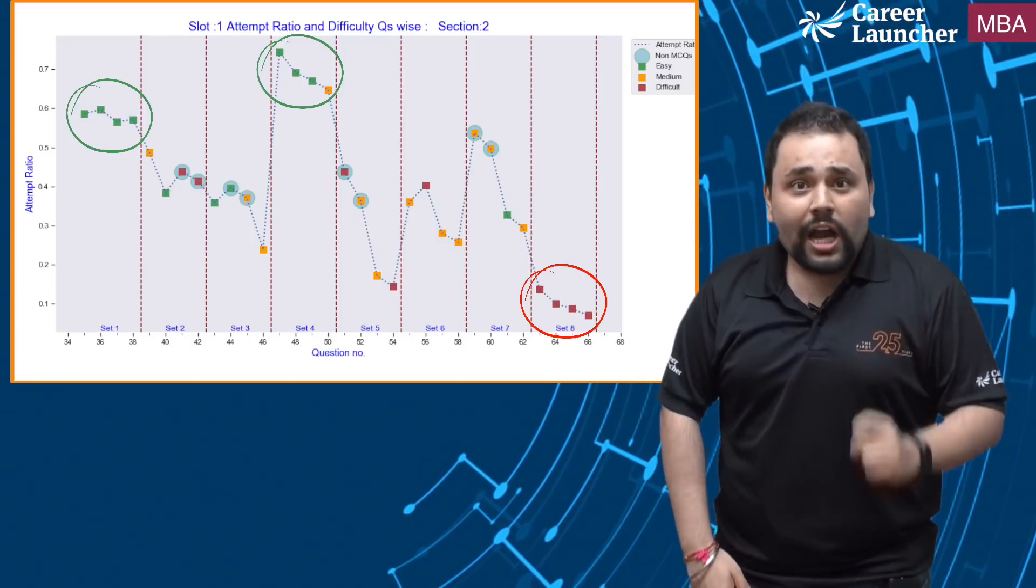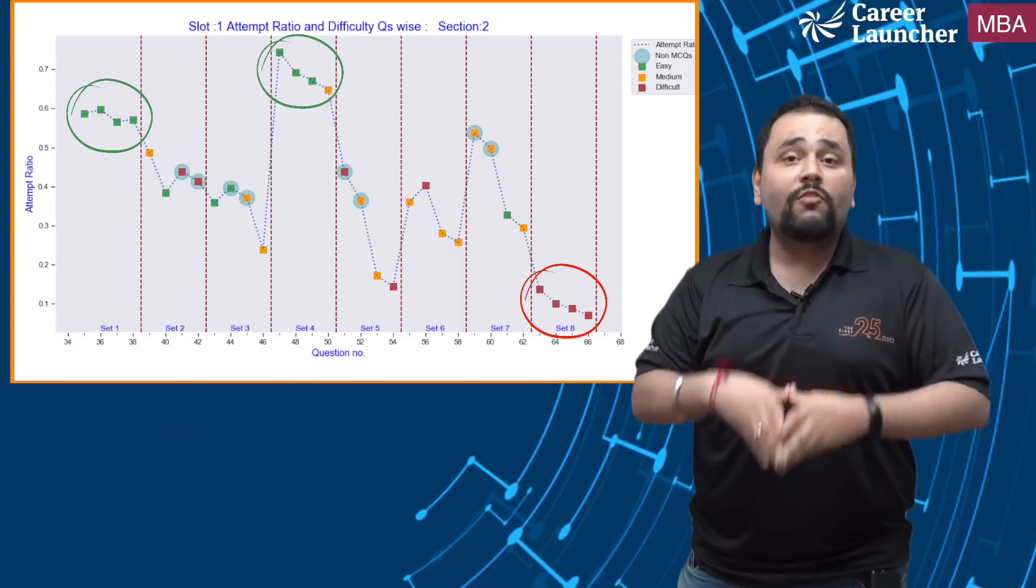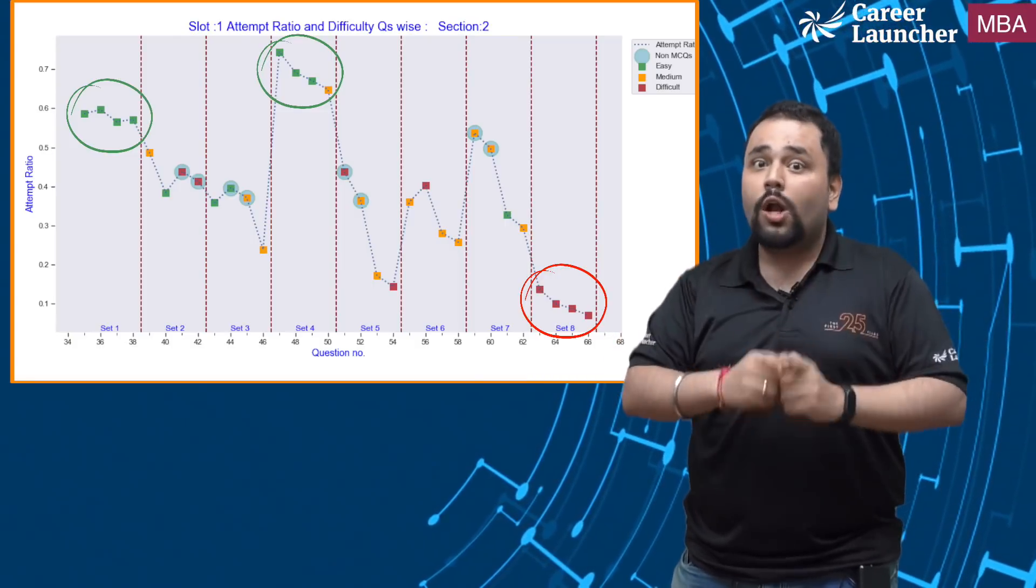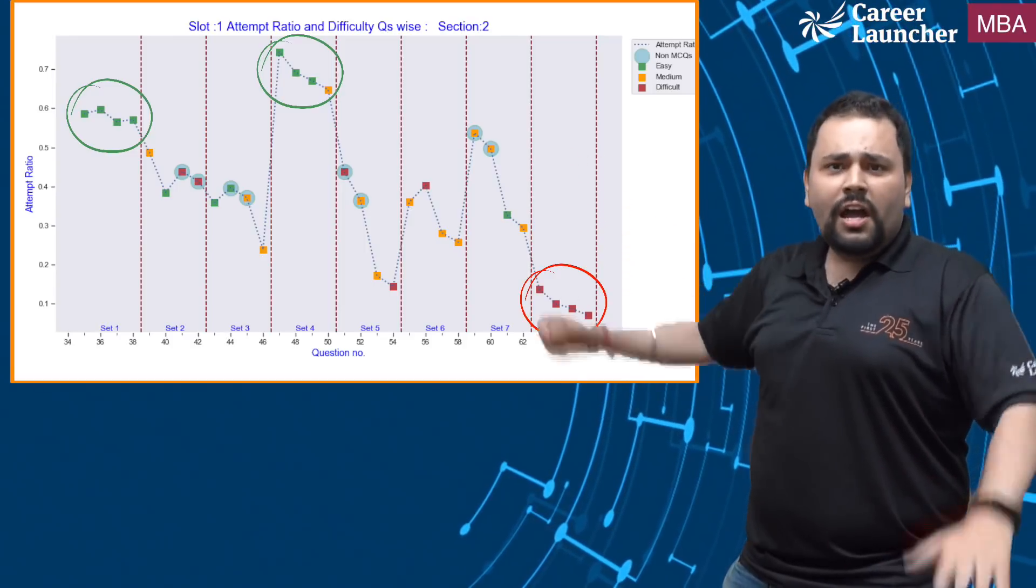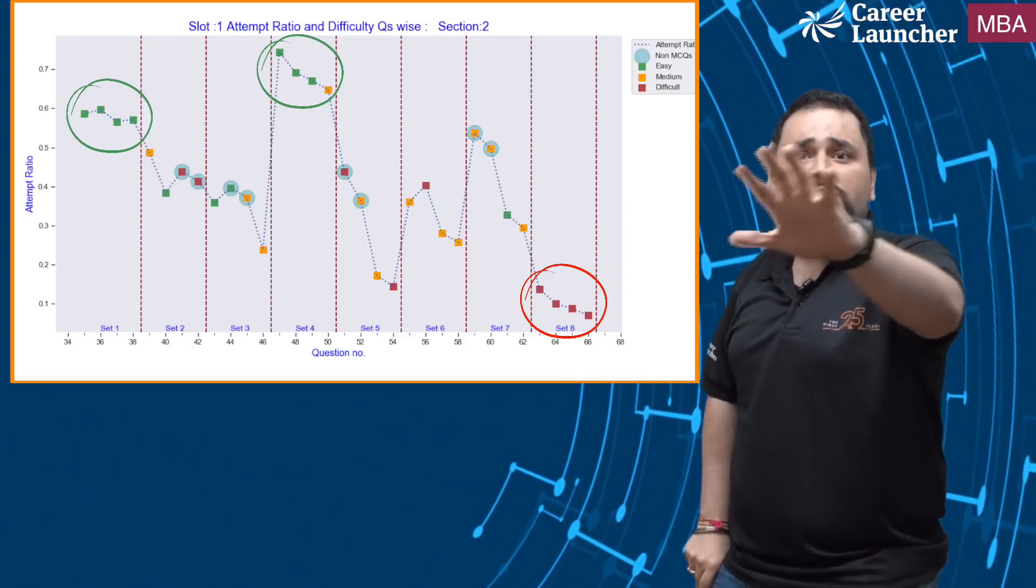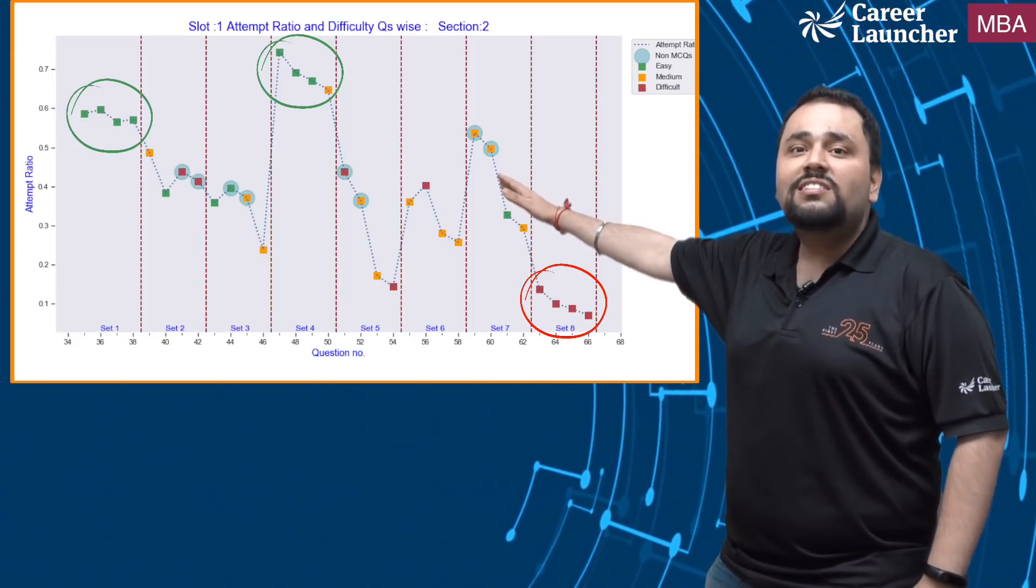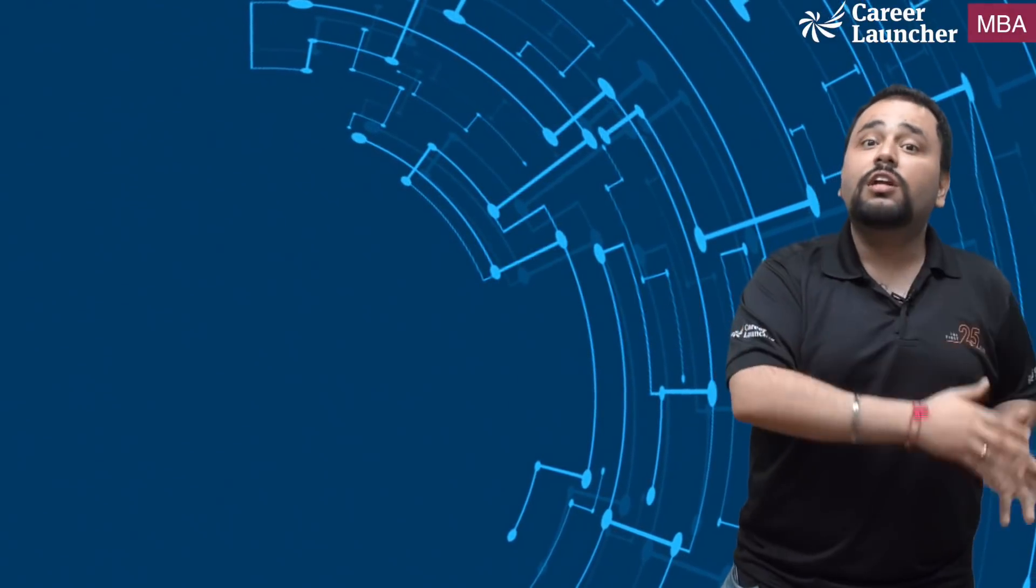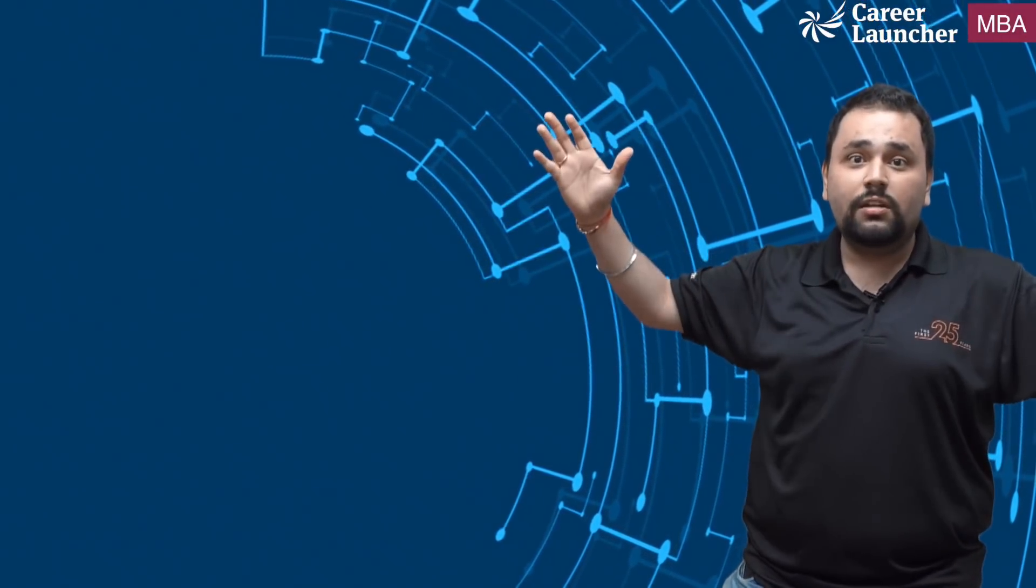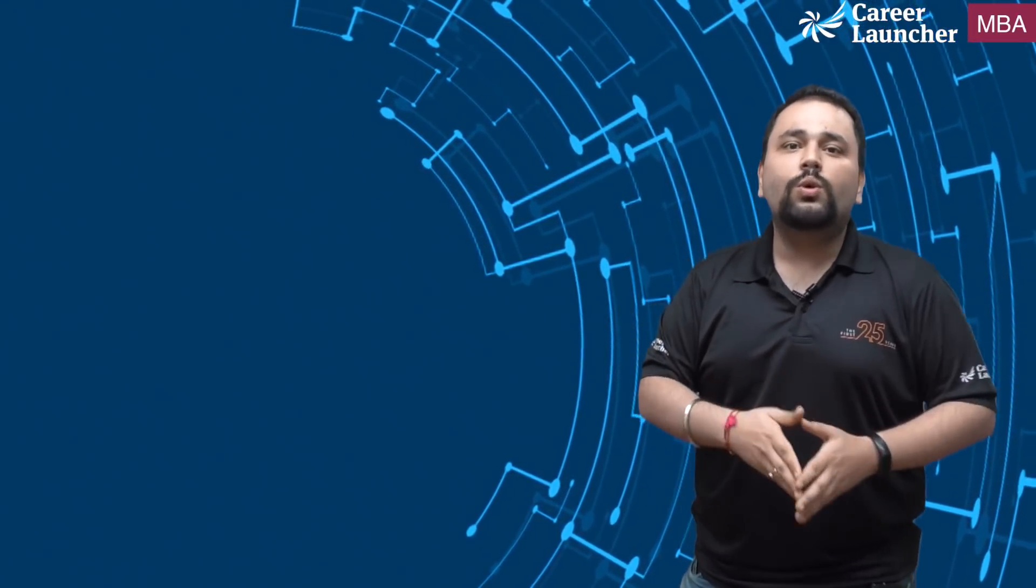Second do you now realize why we harp on the fact that CAT is not about solving sets it is about solving questions within the sets. Because as is evident in this graph there are roughly five or six sets which are close to two questions that can be qualified as easy. Do you have the ability to identify that? If you do and you turn around and state I won't solve 16 I will solve 16 questions and not solve four sets you might be closer to a 99 percentile as compared to the other case.